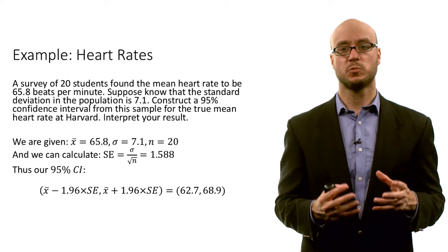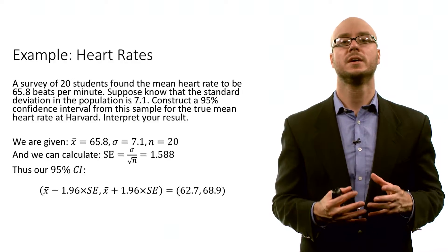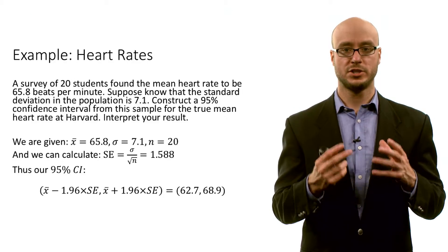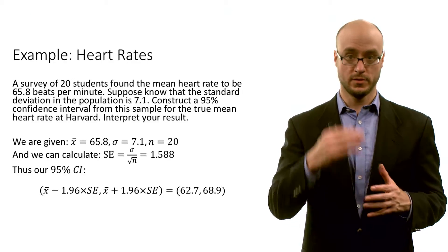To interpret that result, we say we're 95 percent confident that the true population mean heart rate — in which the population is all Harvard students — is between 62.7 and 68.9. To put it another way, if we were to repeatedly and randomly take samples of a size of 20 students from the population of all Harvard students, we'd expect 95 percent of these intervals to contain the true population mean.